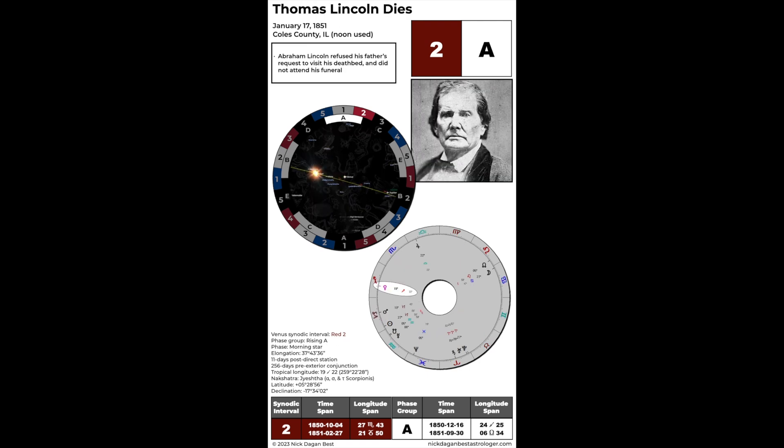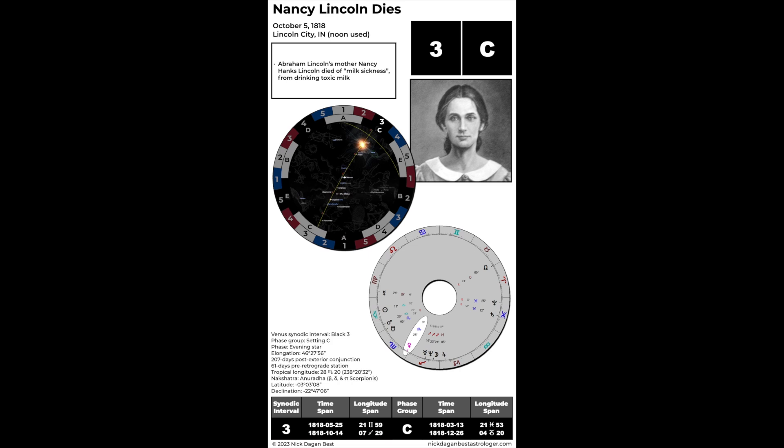Lincoln's father died in January of 1851 during a red two interval. And finally, his mother Nancy Hanks Lincoln died of milk poisoning in October of 1818 — about two months before Mary Todd was born. She died not during the red two interval, but just nine days before it began. So I know this isn't horseshoes or darts, but that's a pretty interesting near miss.